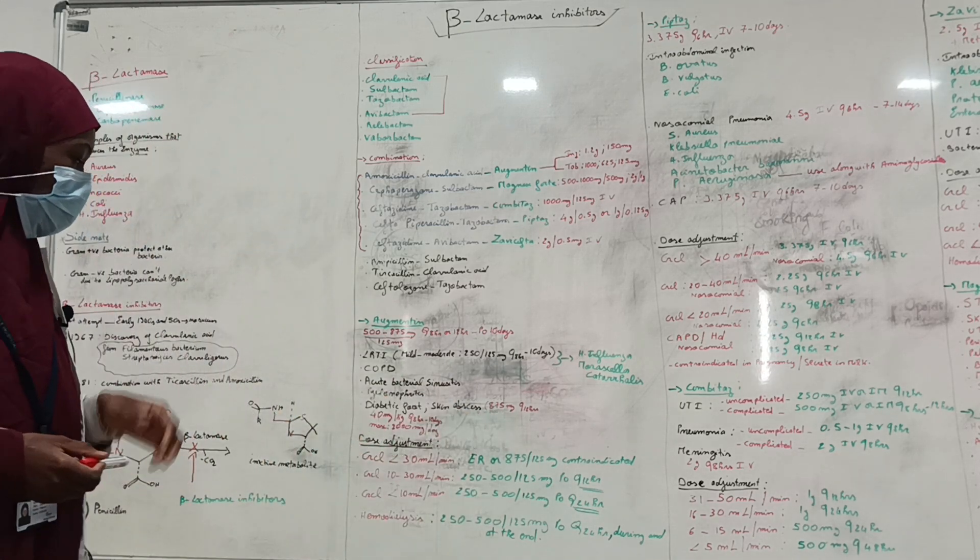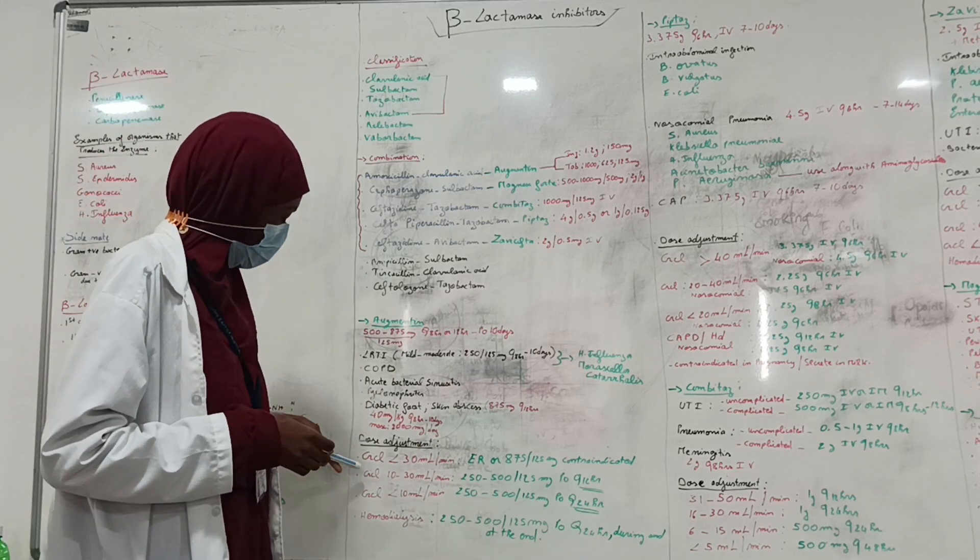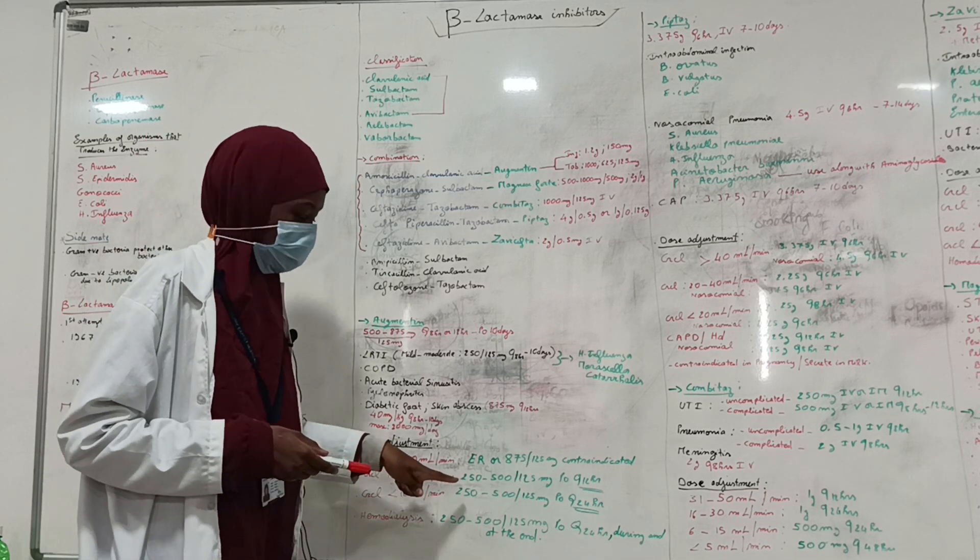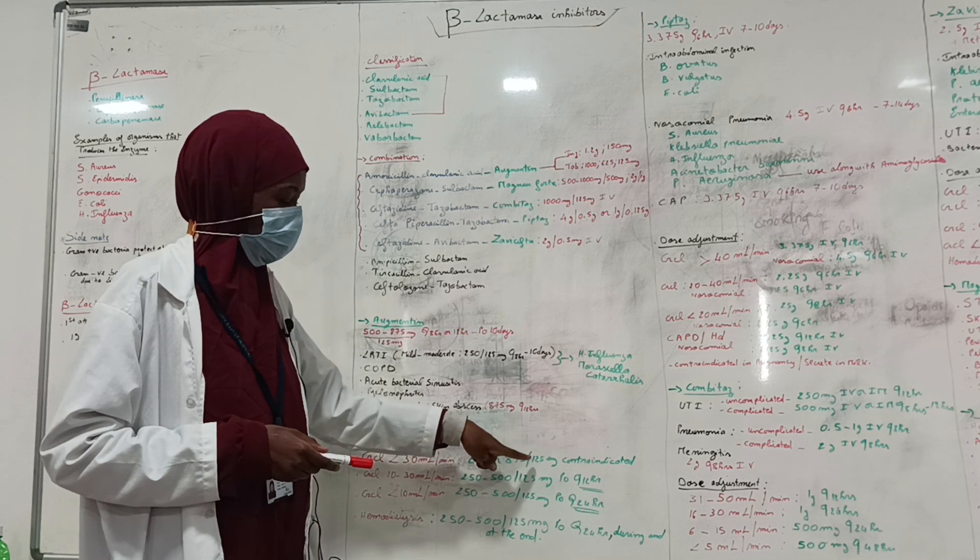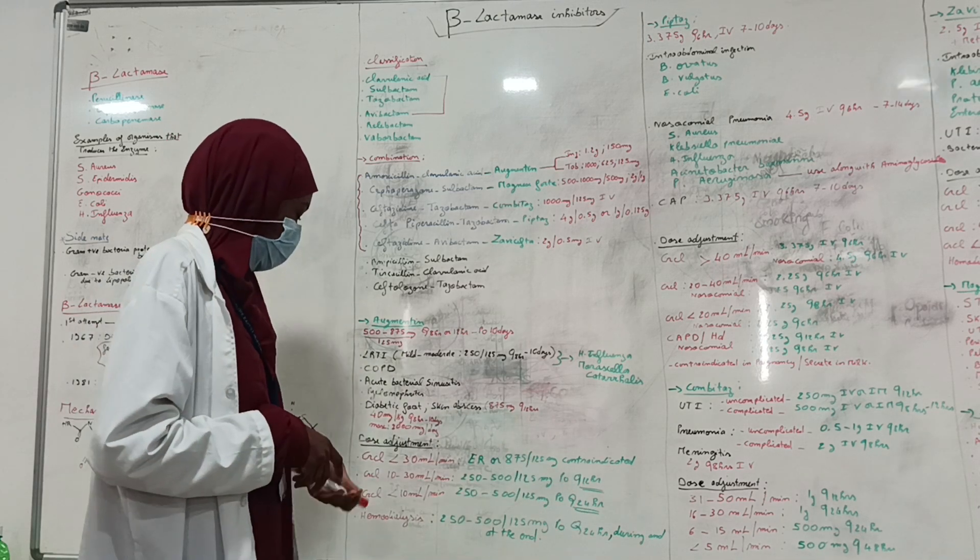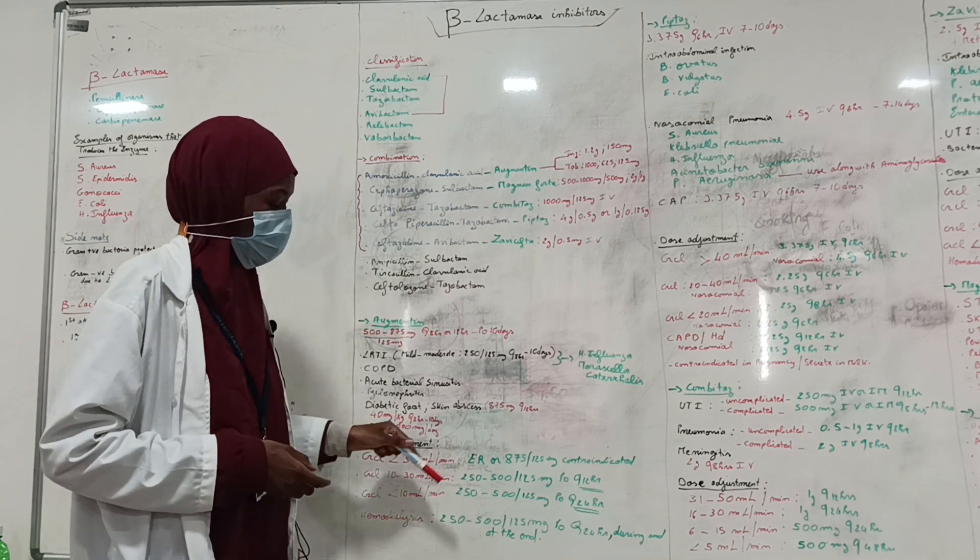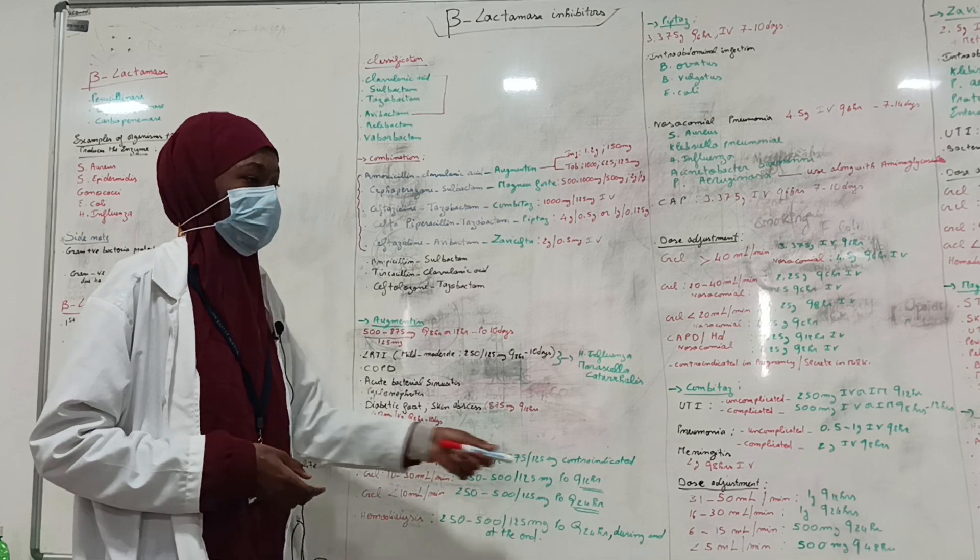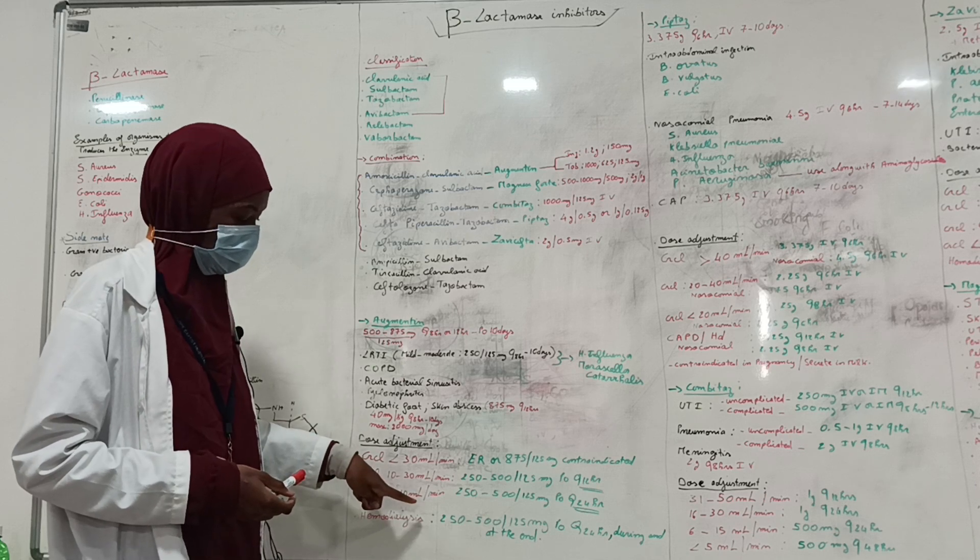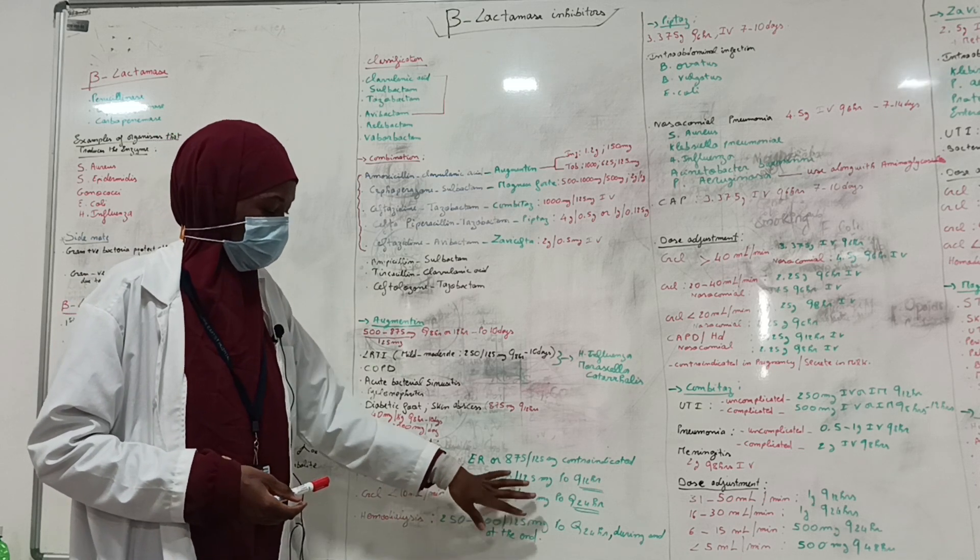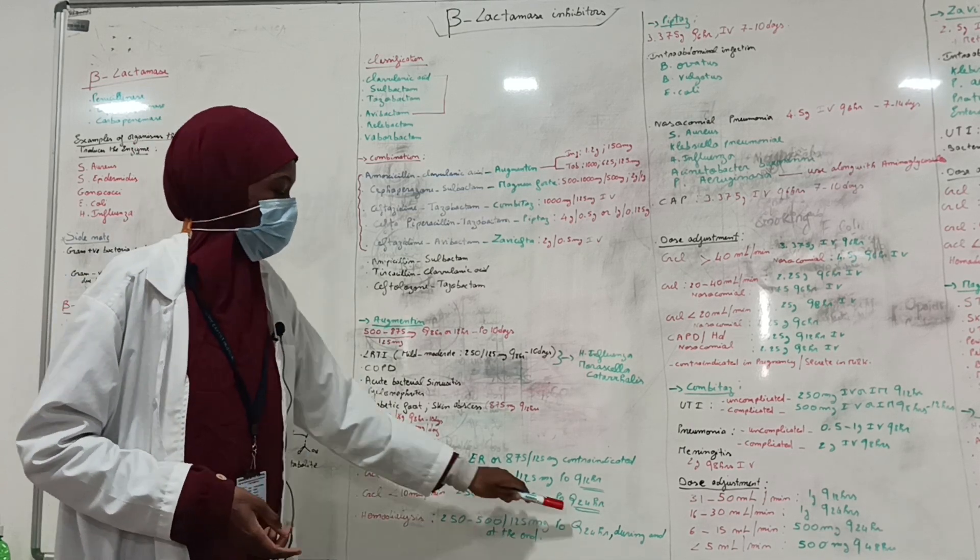When it comes to dose adjustments, for patients who are not on hemodialysis and whose creatinine clearance is less than 30 ml per minute, extended release or dose of 875 by 125 mg is contraindicated. For a patient with creatinine clearance between 10 to 30 ml, 250 to 500 by 125 mg every 12 hours is recommended. For a patient whose creatinine clearance is less than 10 ml, 250 to 500 by 125 mg every 24 hours is recommended.